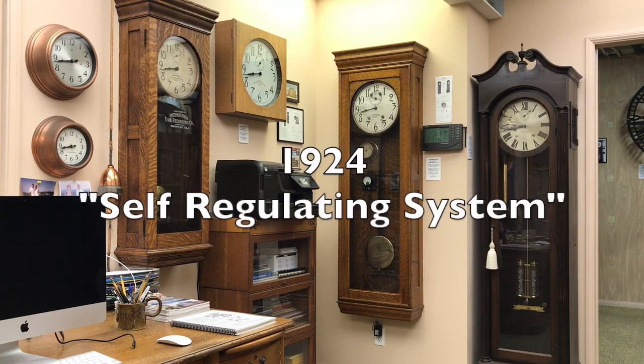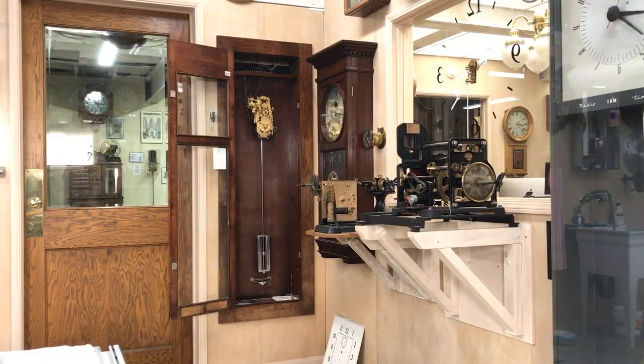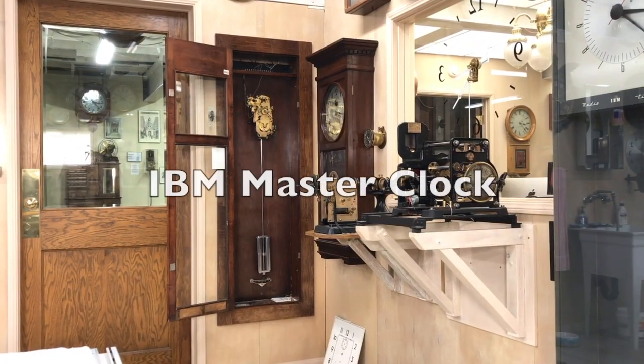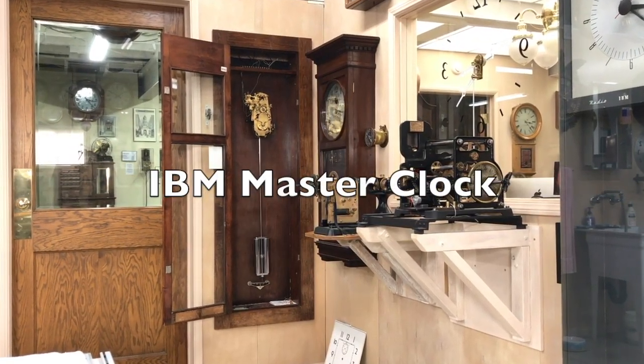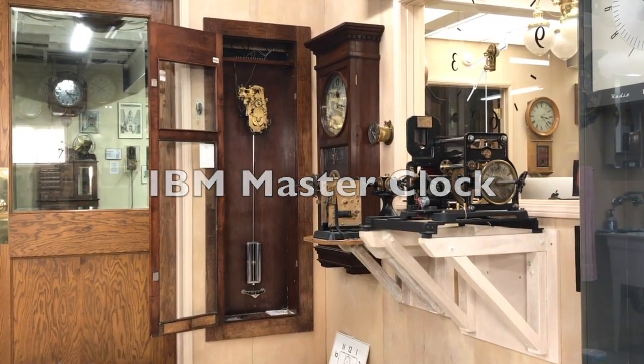By 1924 IBM developed an automatic correction system. They termed their system the self-regulating system. This correction system was the first to be developed by any of the time system companies. This 1953 IBM master clock has the self-regulating feature and controls all of my IBM slave clocks.